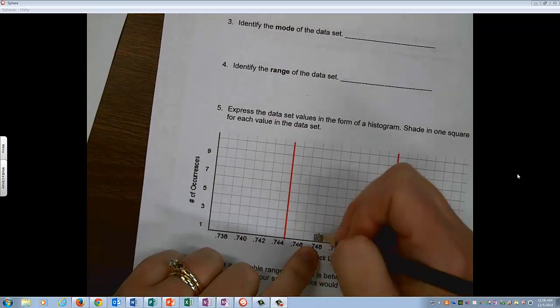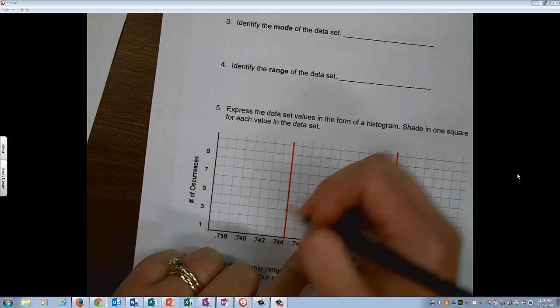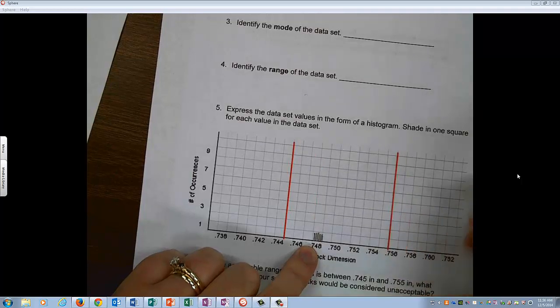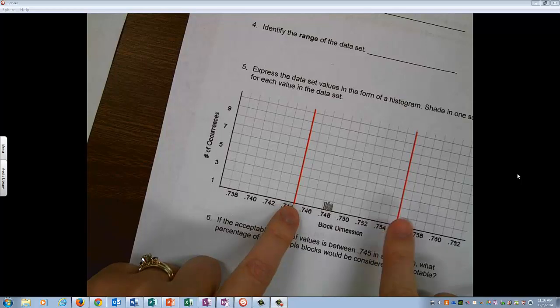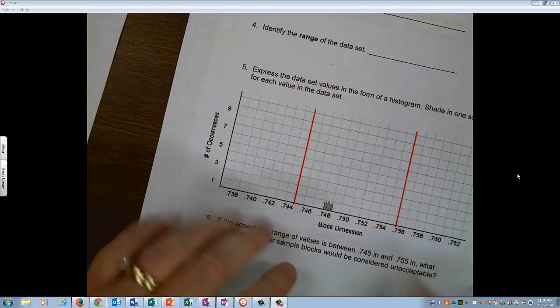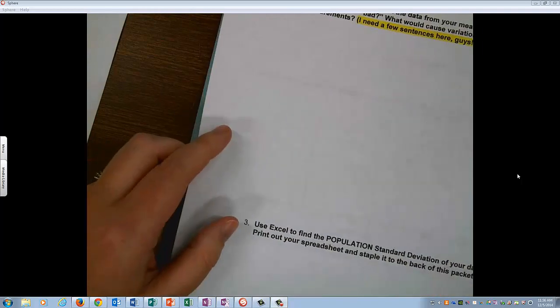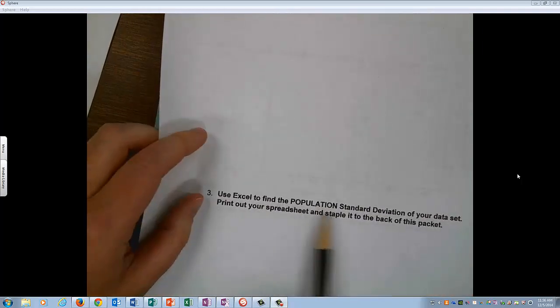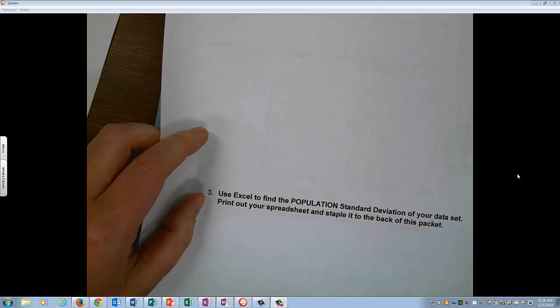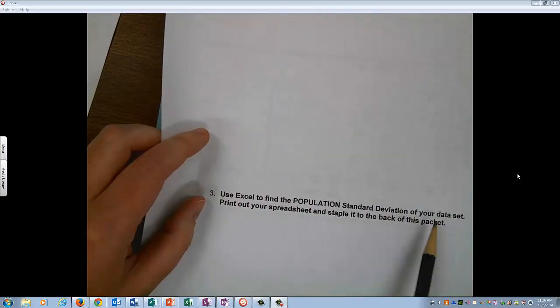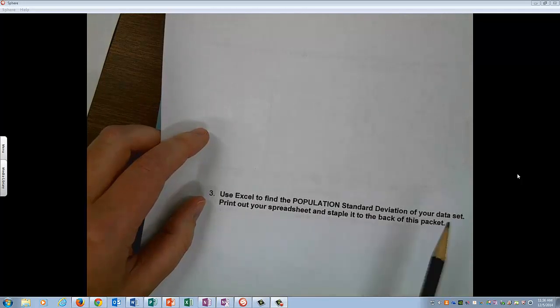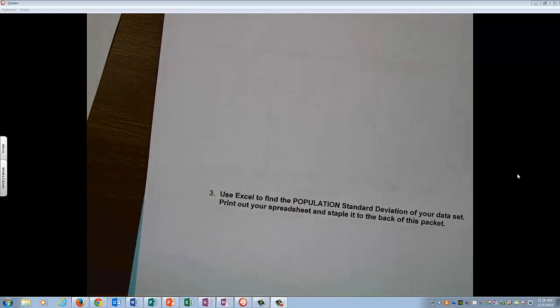Then you are going to calculate the percentage of your blocks that fall between these two red lines. And finally there are some questions here for you to answer including finding the population's standard deviation of your data set. And once again you can use Excel. There is a separate video that shows you how to do this in Excel. So good luck and have fun measuring cubes.